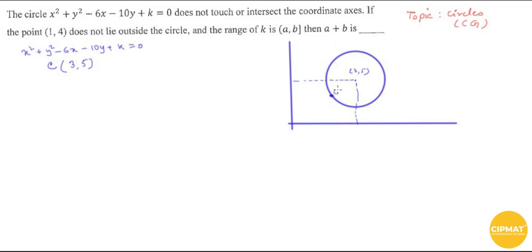So (1, 4) can lie at most on the circle — the circle cannot be smaller than that. Also, the circle should not touch or intersect the coordinate axes, so the circle cannot extend to touch either axis.